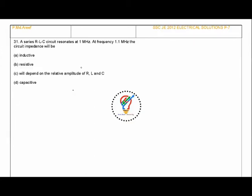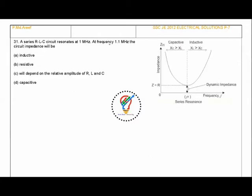Hello friends, welcome to my YouTube channel. We will continue our discussion on SSC JE 2012 electrical solutions, part 7. A series RLC circuit resonates at 1 MHz. At frequency 1.1 MHz, what is the nature of the circuit impedance?